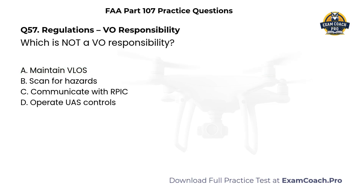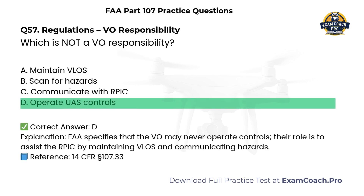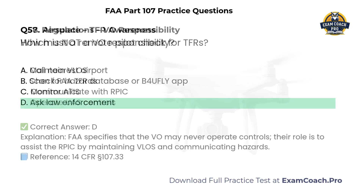Regulations — Visual Observer Responsibility. Which is NOT a visual observer responsibility? A. Maintain visual line of sight. B. Scan for hazards. C. Communicate with remote PIC. D. Operate UAS controls. Correct answer: D. Operate UAS controls. The FAA specifies that the visual observer may never operate controls; their role is to assist the remote PIC by maintaining line of sight and communicating hazards.